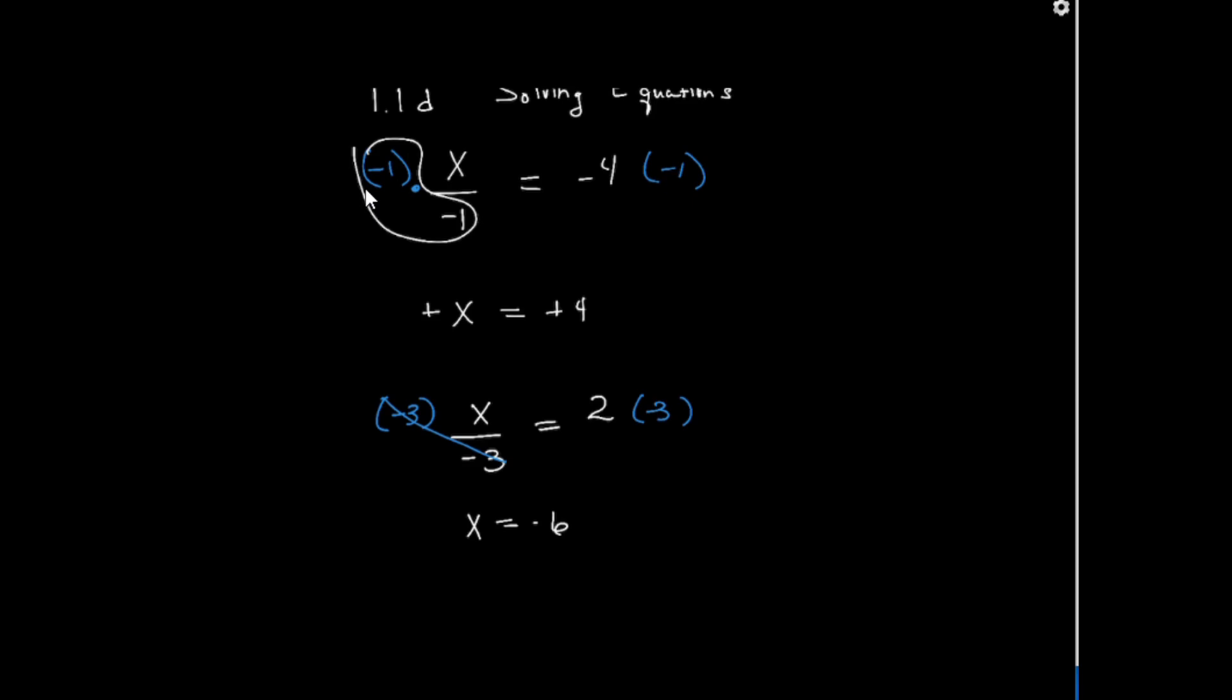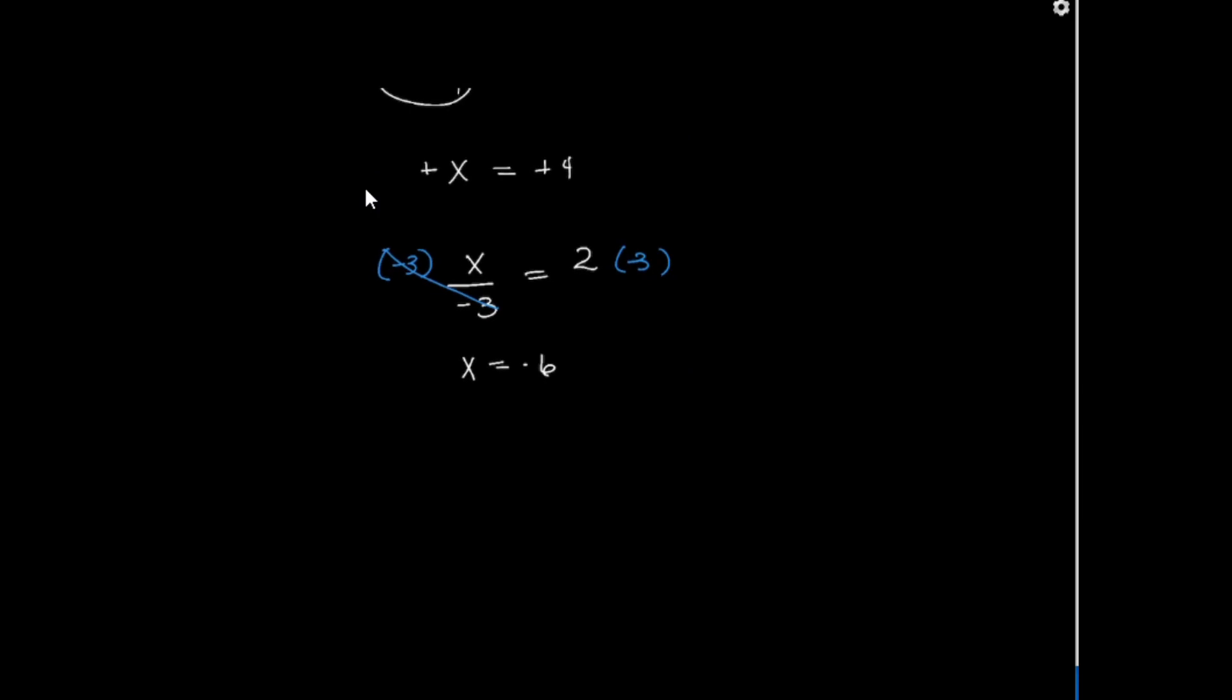Now, this can look a little bit differently sometimes. Let's say I had negative x over 4 equals 1. In this case, because the coefficient in front of the x is negative, I would still want to multiply both sides of this equation by negative 4, leaving me with x equals negative 4.